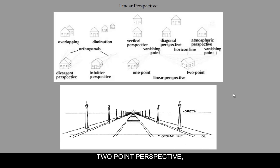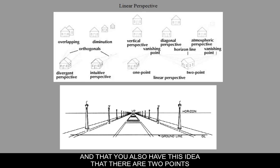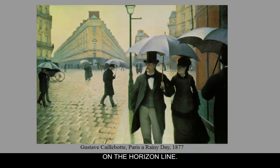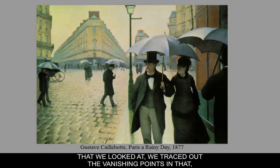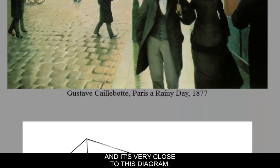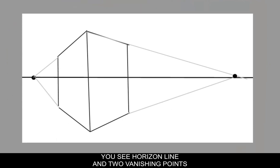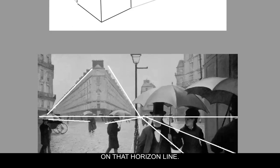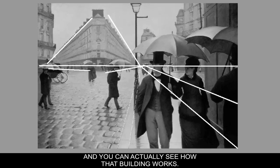In two-point perspective, you have the corner of something facing you, and there are two points on the horizon line. In the painting by Gustave Caillebotte that we looked at, we traced out the vanishing points. You can see a horizon line and two vanishing points on it, and you can actually see how that building works.